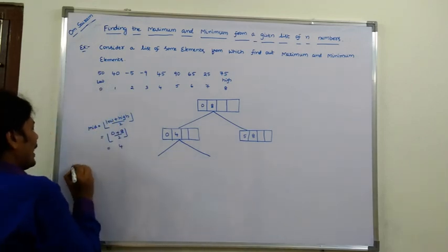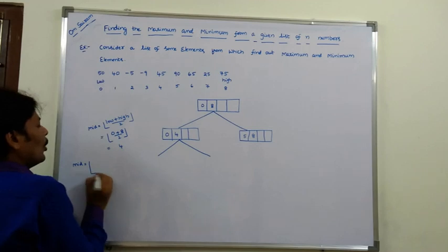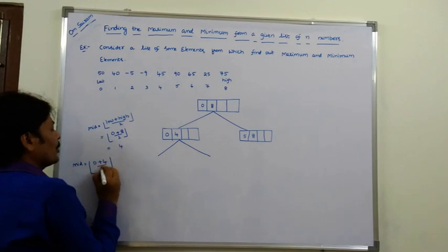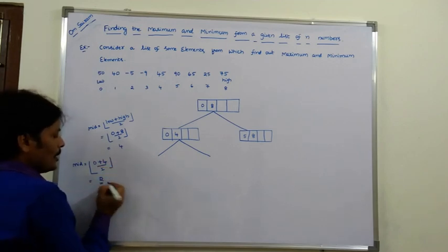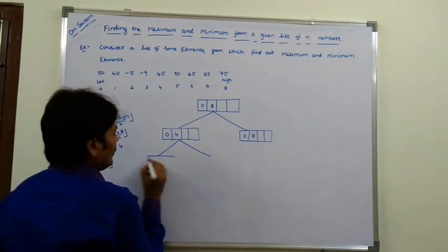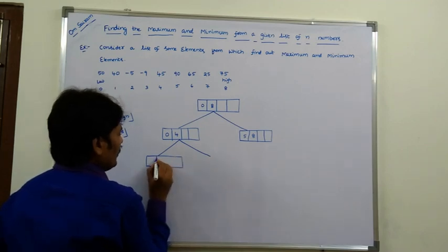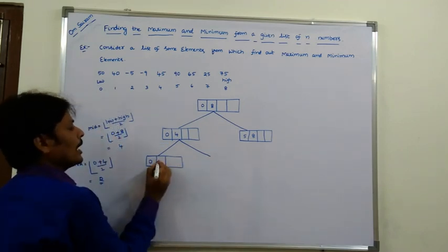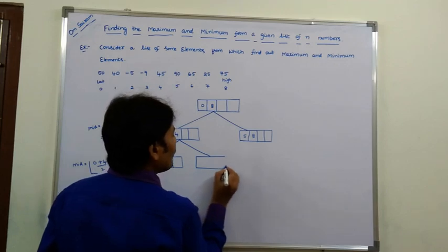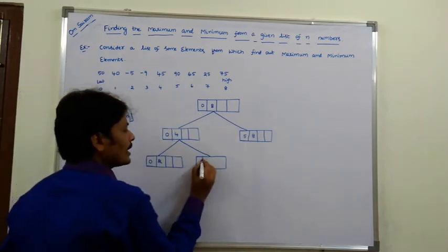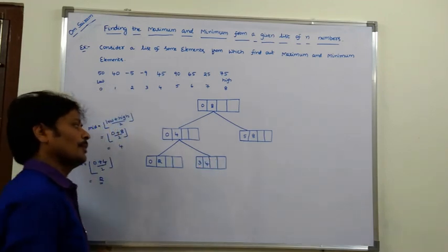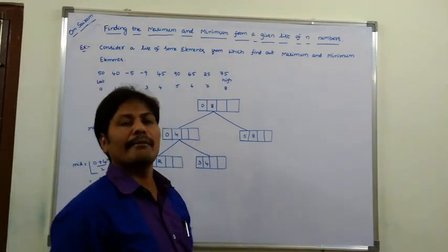The first sublist [0 to 4] is divided again. Mid = floor((0 + 4) / 2) = 2. So the first sub-sublist covers indices 0 to 2, and the second sub-sublist covers indices 3 to 4.